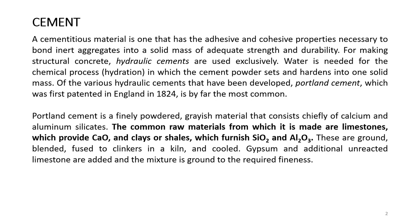The raw material of cement is limestone and clay. The chemical names are calcium oxide and clays or shale which contains silicon dioxide and aluminum. These are ground and blended and fused to clinkers — that means heated in a kiln and cooled. After that, gypsum and additional untreated limestone are added, and the mixture is ground to the required fineness.